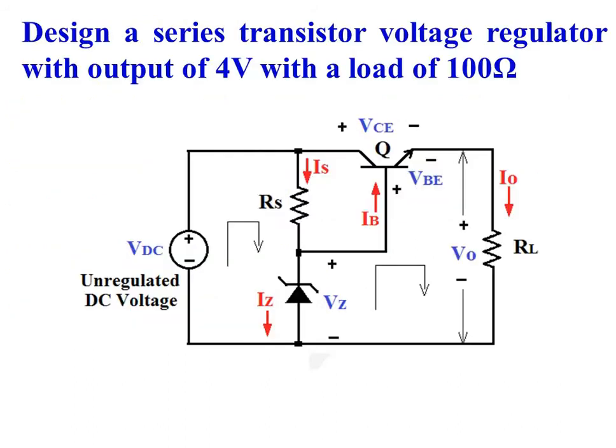Now let us design a series transistor voltage regulator with an output voltage of 4V and a load of 100 Ohms. This is the circuit diagram with the various currents and voltages marked. VZ is the voltage across the Zener diode, V0 is the regulated output voltage, VBE is the potential difference between base and emitter, and VCE is the potential difference between collector and emitter of the transistor. The unregulated DC voltage is denoted as VDC.